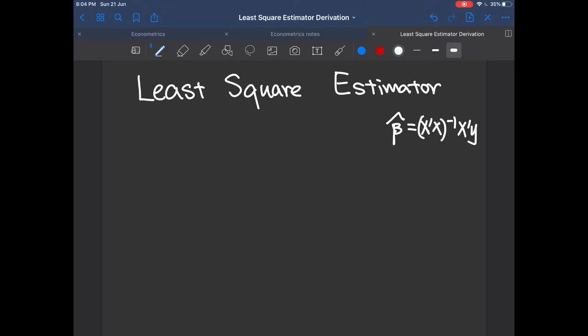So a typical linear model looks like this: y is equal to x beta plus e. So here y is the response variable or the dependent variable with a dimension of m by 1.